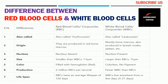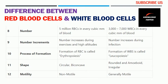The sixth basis for comparison is production. Approximately 2 million red blood cells per second are produced in the human body, while fewer white blood cells are produced than red blood cells. The seventh basis is lifespan — red blood cells have an average lifespan of 120 days, while white blood cells live anywhere from a few days to 5 to 21 days.